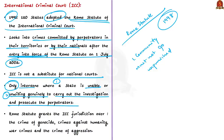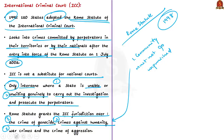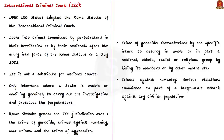The Rome Statute grants the ICC jurisdiction over four main crimes. First, the crime of genocide — characterized by specific intent to destroy a national, ethnic, racial, or religious group by killing its members or by other means. Second, crimes against humanity — serious violations committed as part of large-scale attacks against civilian populations, including murder, rape, enforced disappearances, enslavement, sexual slavery, torture, apartheid, and deportation.